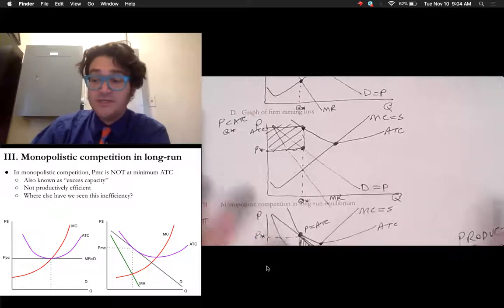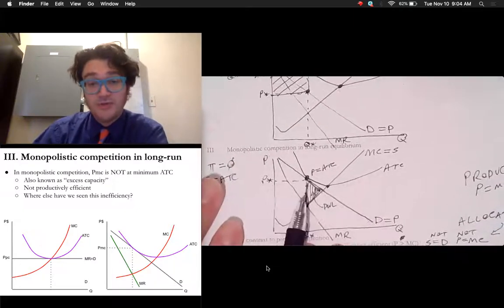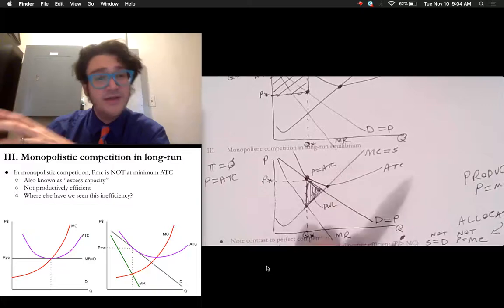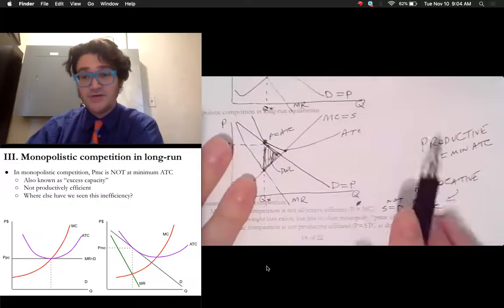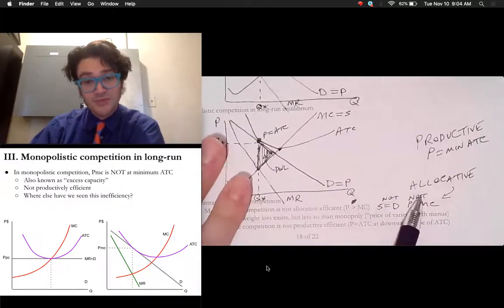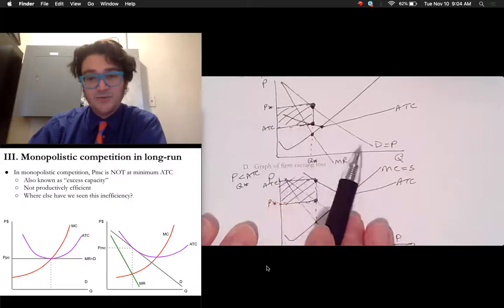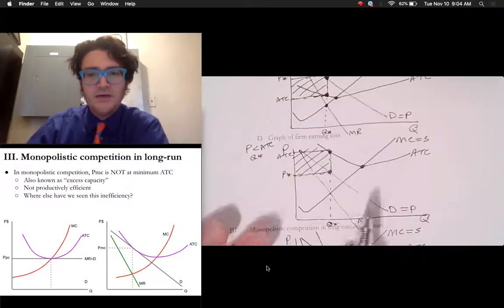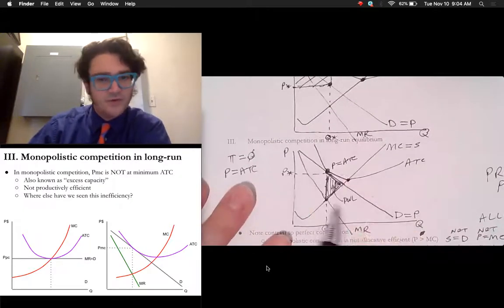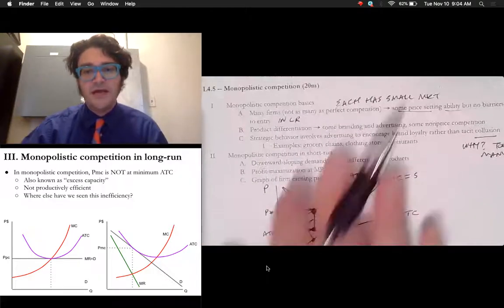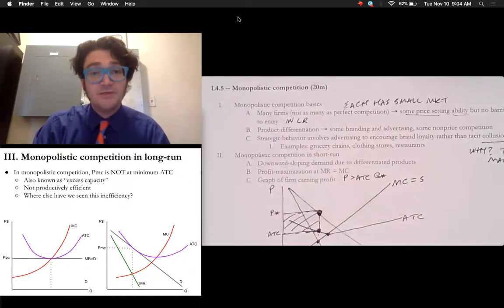So that's what you need to know. In the long run, they basically return to this normal economic profit. So they behave like perfect competition, but they're different from perfect competition because they're not productive or allocatively efficient. Typically they behave like monopolies in that they have this downward sloping marginal revenue curve. But at the same time, they return to a long run equilibrium. So there's a little bit of both. Hopefully this helped you with monopolistic competition. I'll see you next time.